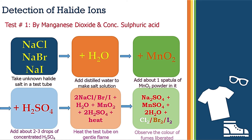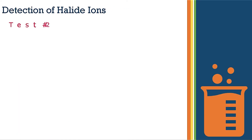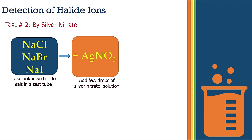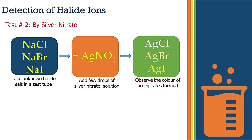Another very common test for detection of halide ions is the silver nitrate test. Take the unknown halide salt in a test tube, add water to make a solution, then add silver nitrate solution prepared in concentrated nitric acid. After adding silver nitrate, colored precipitates of silver halide will form. White colored precipitates indicate chloride; creamy or dirty yellow precipitates indicate bromide ion; deep yellow precipitates indicate iodide ion.